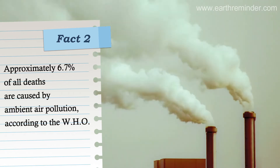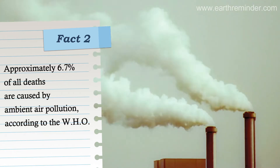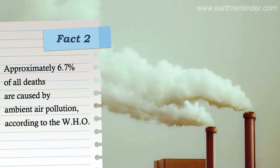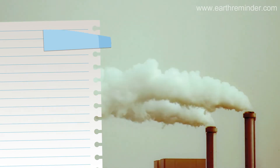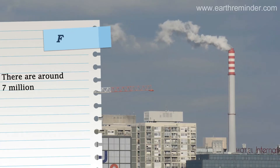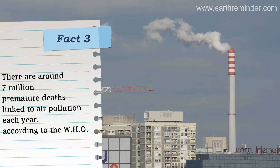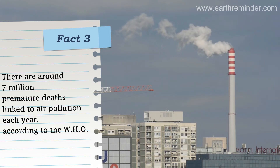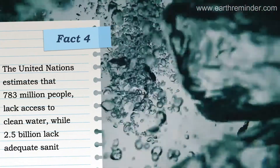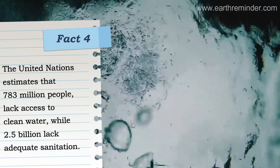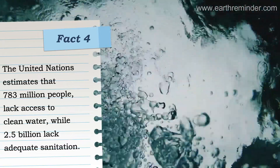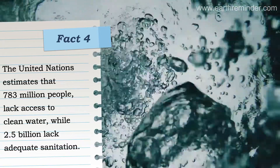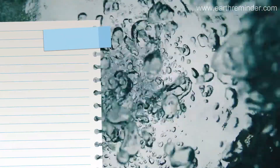Approximately 6.7% of all deaths are caused by ambient air pollution, according to the WHO. There are around 7 million premature deaths linked to air pollution each year, according to the WHO. The United Nations estimates that 783 million people lack access to clean water, while 2.5 billion lack adequate sanitation.